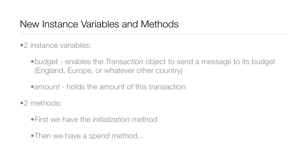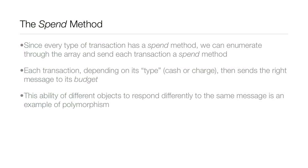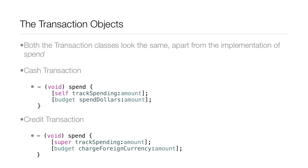The budget instance variable enables the transaction object to send a message to its budget — England, Europe, or whatever other country. The amount variable holds the transaction amount. We'll have two methods: an initialization method and a spend method. Since every transaction type has a spend method, we can enumerate through the array and send each transaction the spend message. Each transaction then sends the right message to its budget depending on its type — cash or charge.